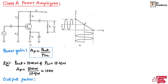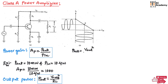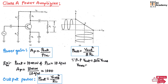Now let us understand output power. If we measure the output voltage in terms of RMS, then the output power can be given as P_out = V_RMS² / R_L. If we measure the output voltage in terms of peak-to-peak, then P_out = V_out² / (8 × R_L). The peak-to-peak output voltage can be written as 2√2 × V_RMS, so from this we get V_RMS = V_out / (2√2).